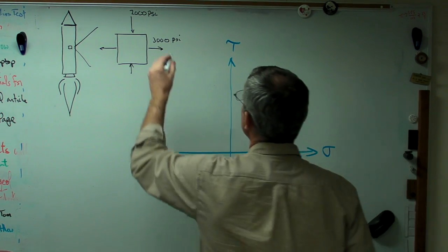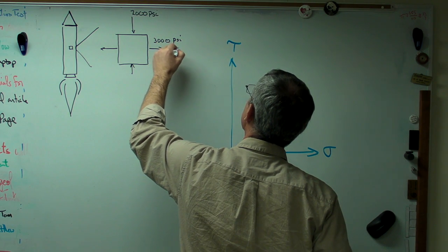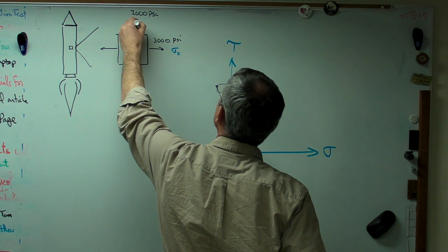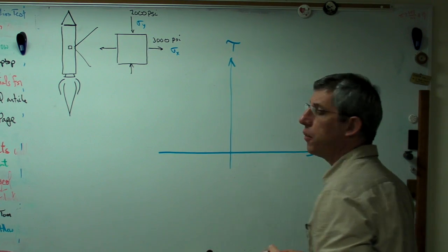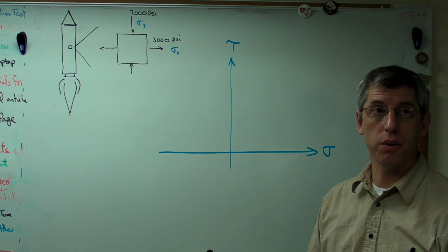All right. This is the stress in the x direction. So I'll call it sigma x. I'll call this sigma y. Now, because of the way I've got the problem set up, there is no tau xy.